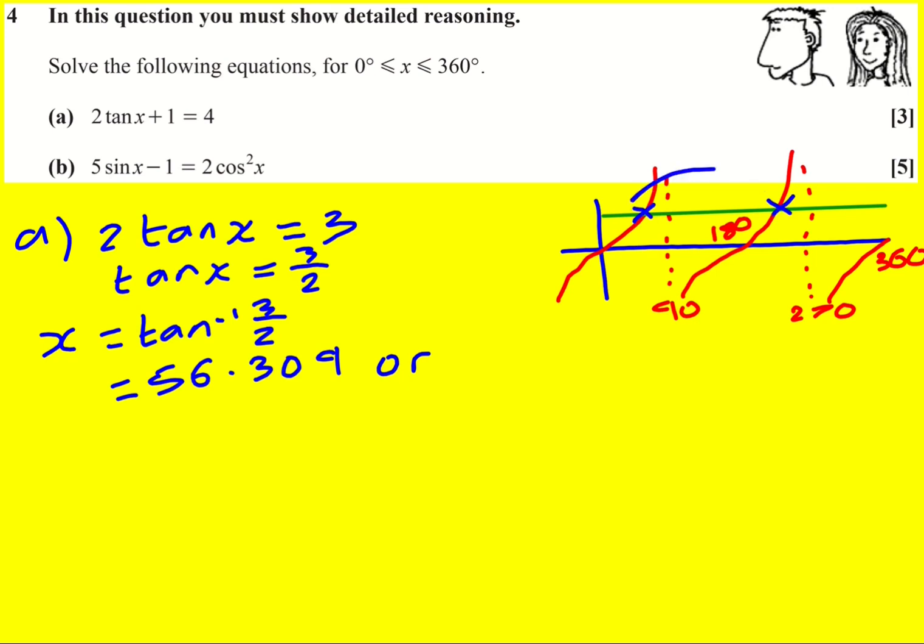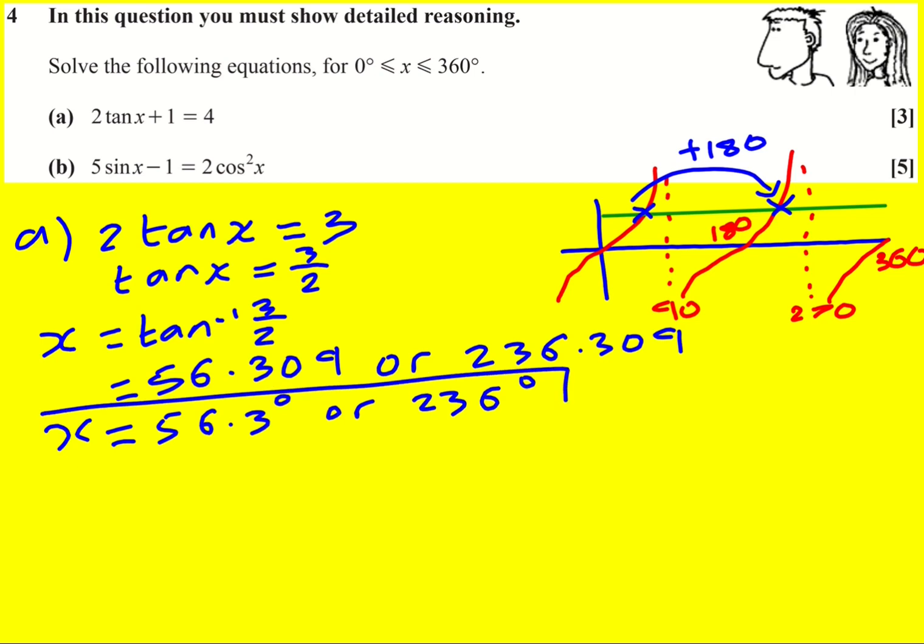So to get this one, just use the symmetry of the graph and add on 180. And I can actually add on 200 and minus 20, so it's going to be 236.309. Finally, round to three significant figures: 56.3 degrees or 236 degrees. Brilliant.